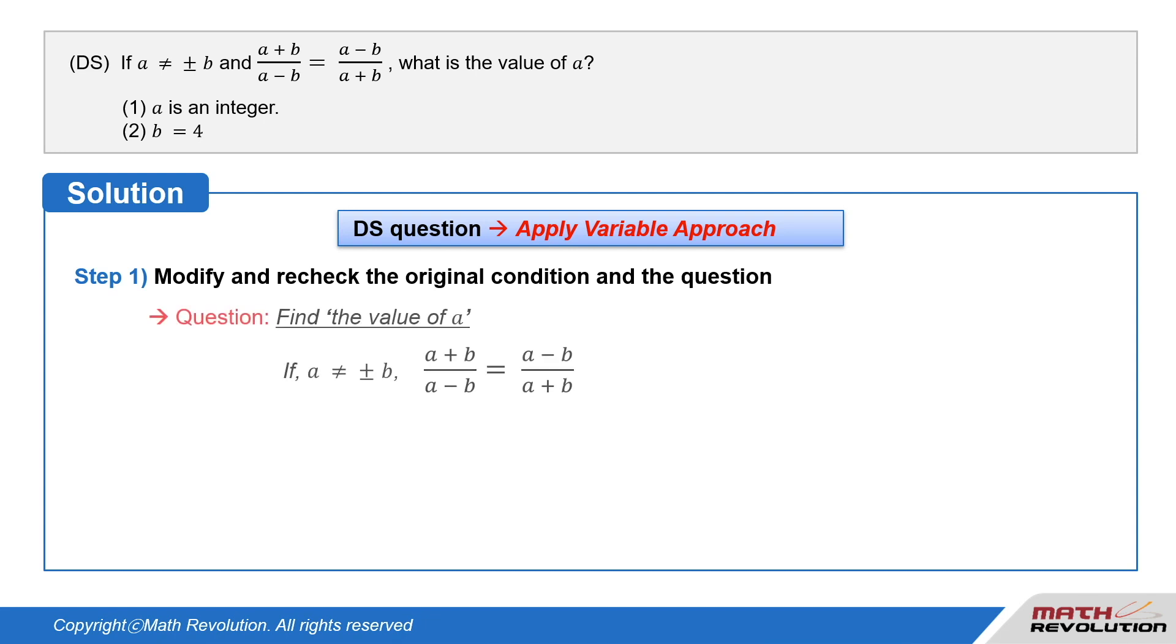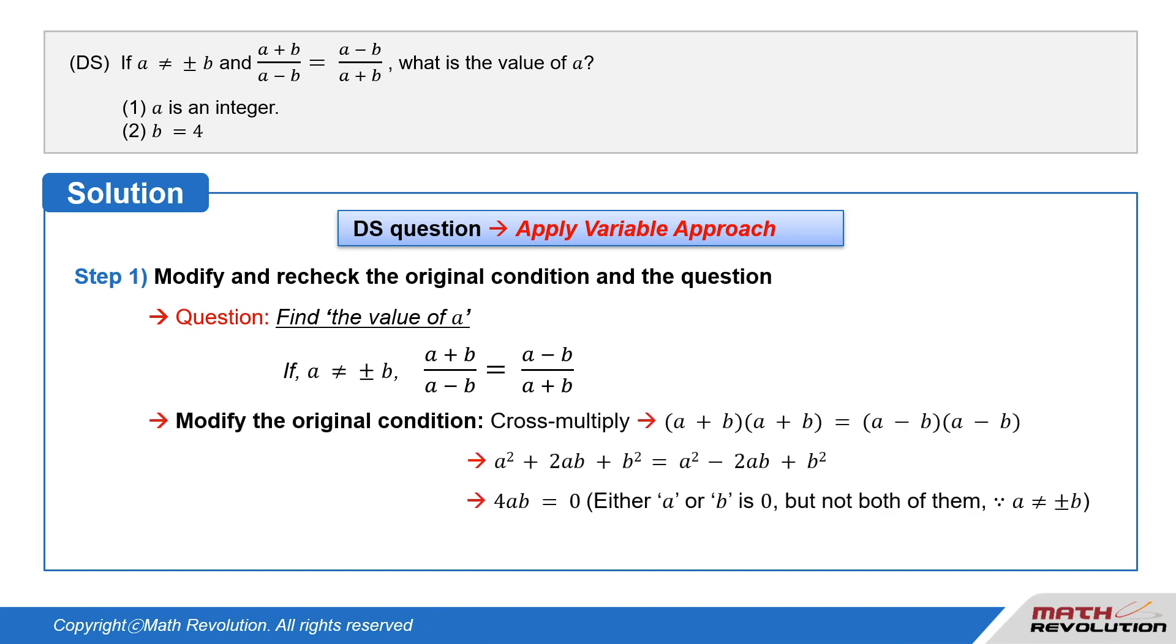We have to find the value of a if a is not equal to plus or minus b, and a plus b over a minus b equals a minus b over a plus b. We can cross multiply both sides.